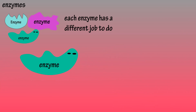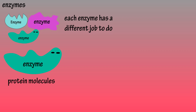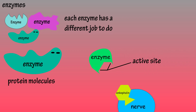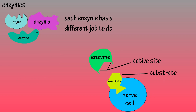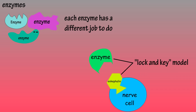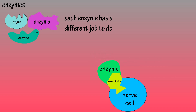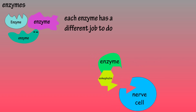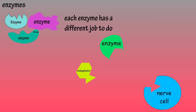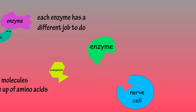Enzymes are protein molecules, and they have what is called an active site, which is a region where a substrate molecule binds to. The term substrate is used to describe a molecule that an enzyme acts upon. This process is sometimes described as a lock and key model. Once the enzyme and the substrate bind, the chemical reaction occurs, and the enzyme has done its duty.